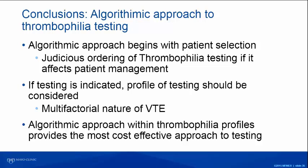The bottom line is: if testing affects your management, it's reasonable to test. And if you do test, it's reasonable to do a profile — as Dr. Nichols showed, false-positive lupus anticoagulants can occur with direct thrombin inhibitors and direct Xa inhibitors. When you do a profile you're able to detect those, and we think it provides the most cost-effective approach.